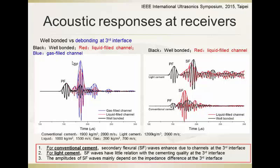However, this is only valid for conventional cement with greater density and faster velocity. If we use light cement — which has similar acoustic impedance to the fluid channel — we can hardly distinguish whether the interface between the cement and formation is good or not, because the amplitude of the secondary flexural wave mainly depends on the impedance difference at the third interface.